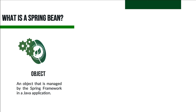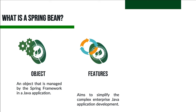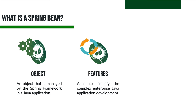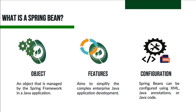A Spring Bean refers to an object managed by the Spring Framework in a Java application. The Spring Framework creates these beans, manages their lifecycle, and organizes their dependencies. It takes care of the instantiation, configuration, and wiring up of objects, saving developers from a lot of manual work. Spring beans can be configured using XML, Java annotations, or Java code.